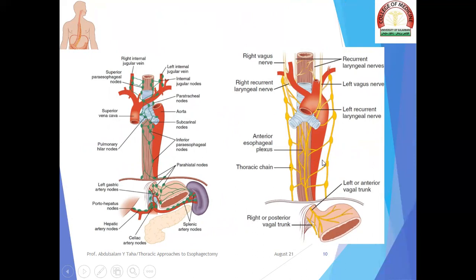Regarding the nerve supply, there are two important cranial nerves: the right vagus nerve and the left vagus nerve. The right vagus nerve gives rise to the right recurrent laryngeal nerve, hooking around the ligamentum arteriosum. In the abdomen, the two vagi form the left (anterior) vagal trunk and the right (posterior) vagal trunk.